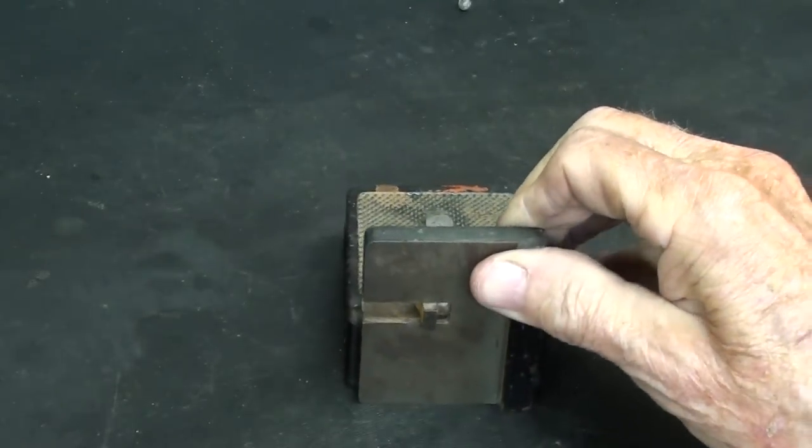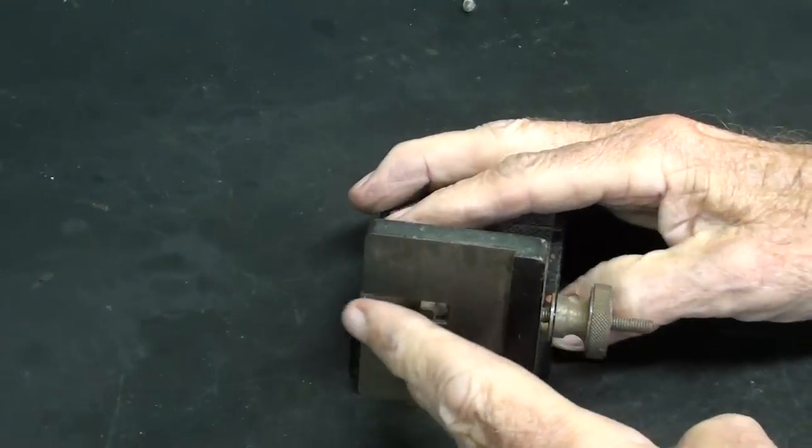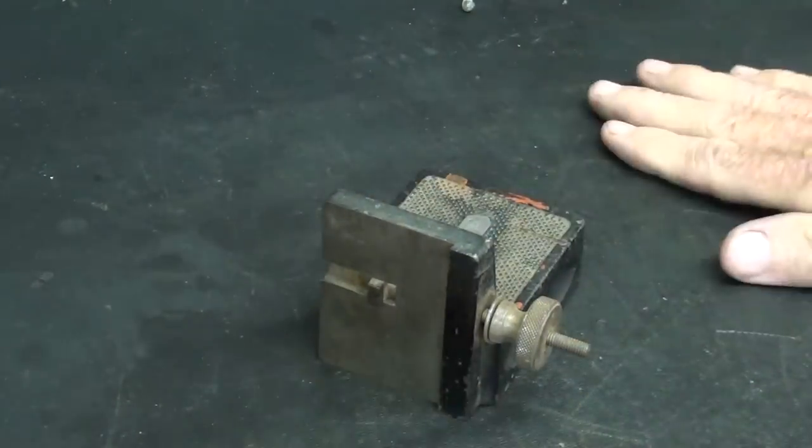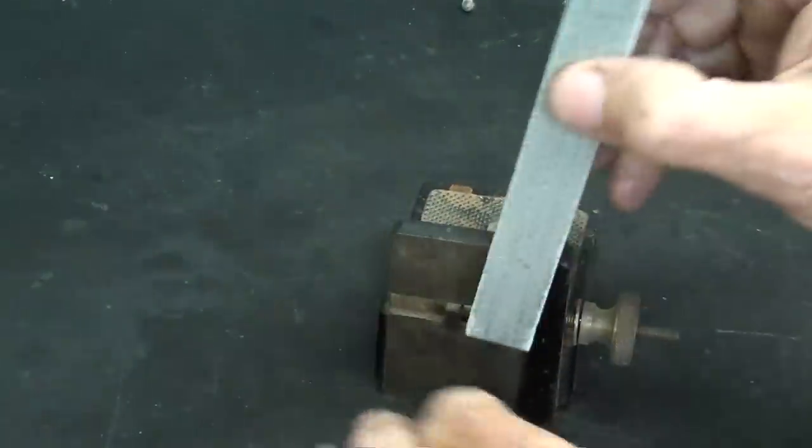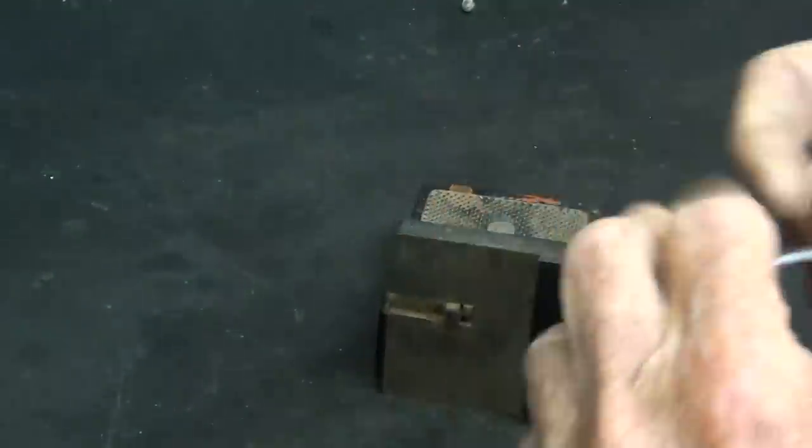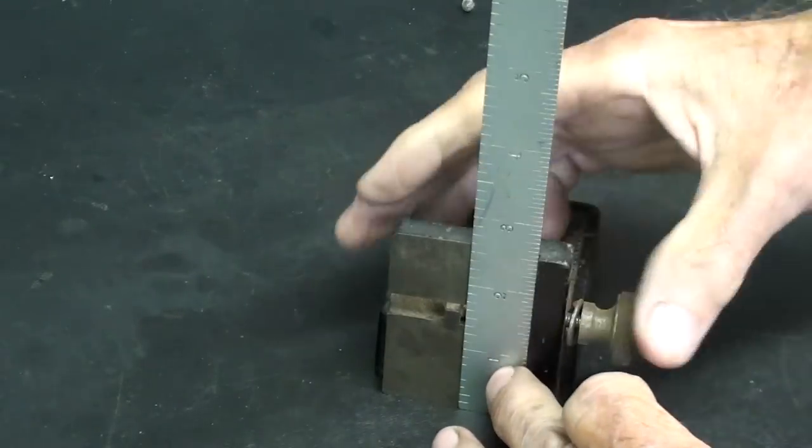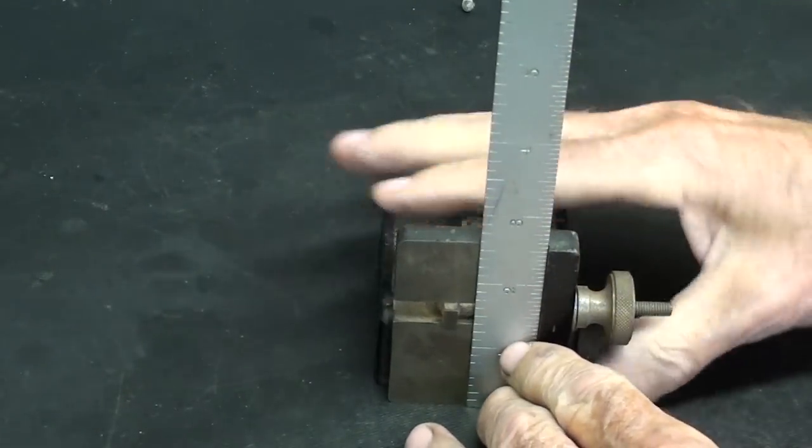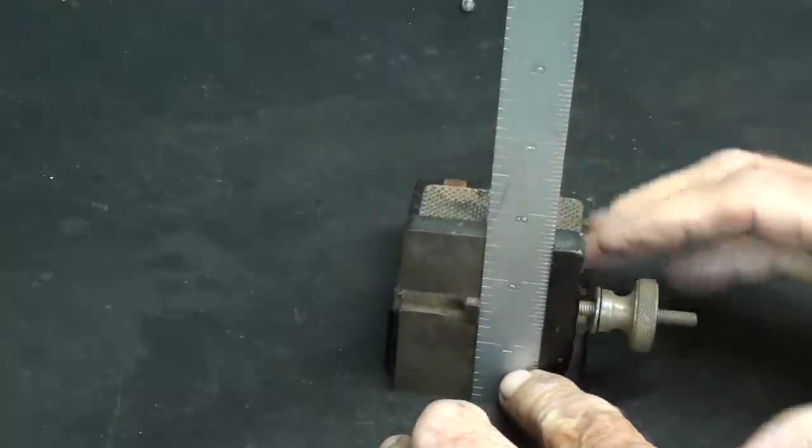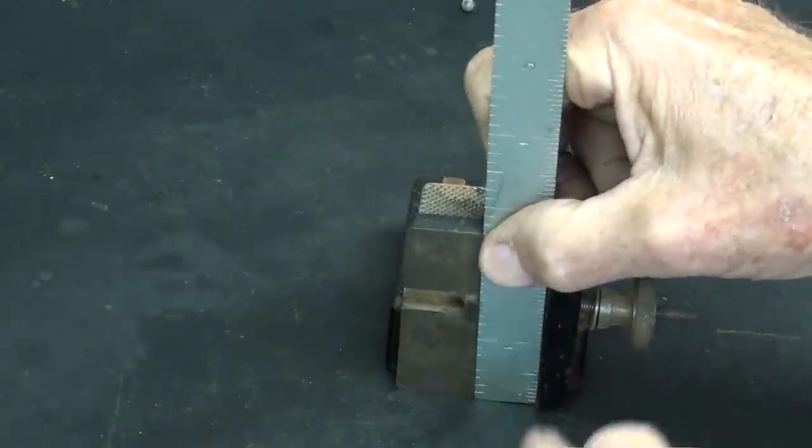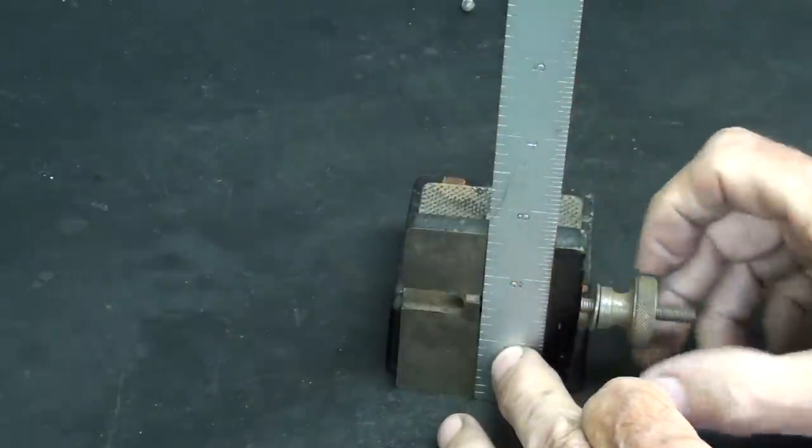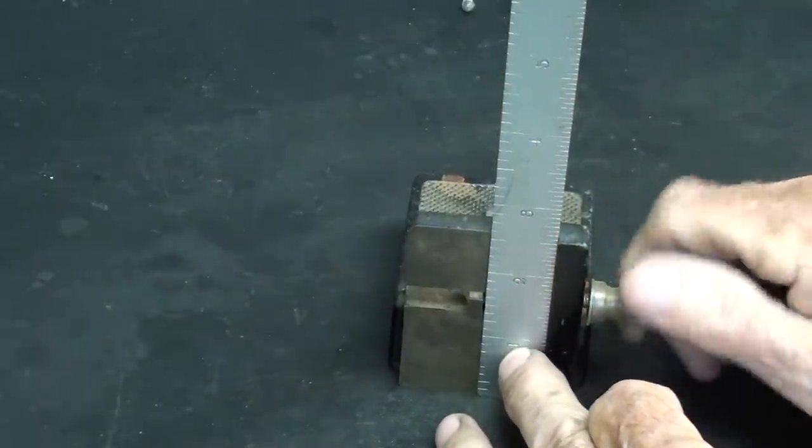And when setting a ruler in there, this would be best used on a surface plate, but I'm just using it on the bench, because after all, it is what I would call a semi-precision tool. Put your ruler in like this, and then you can bring the clamp up, but you want the ruler to be setting on the surface of the table or the plate, and then just draw it up.